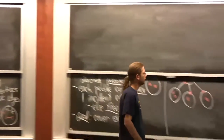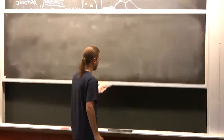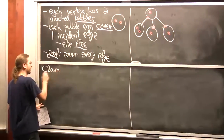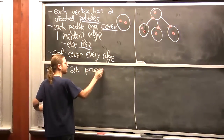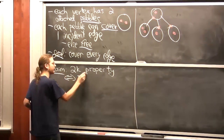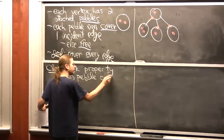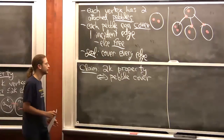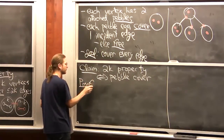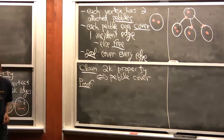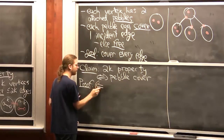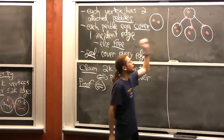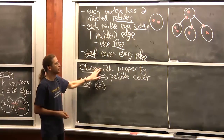The key claim is: a graph has the 2k property if and only if it has a pebble cover. Let's start with the left direction — suppose I have a pebble cover using only two pebbles per vertex, covering all edges. I claim this satisfies the 2k property.